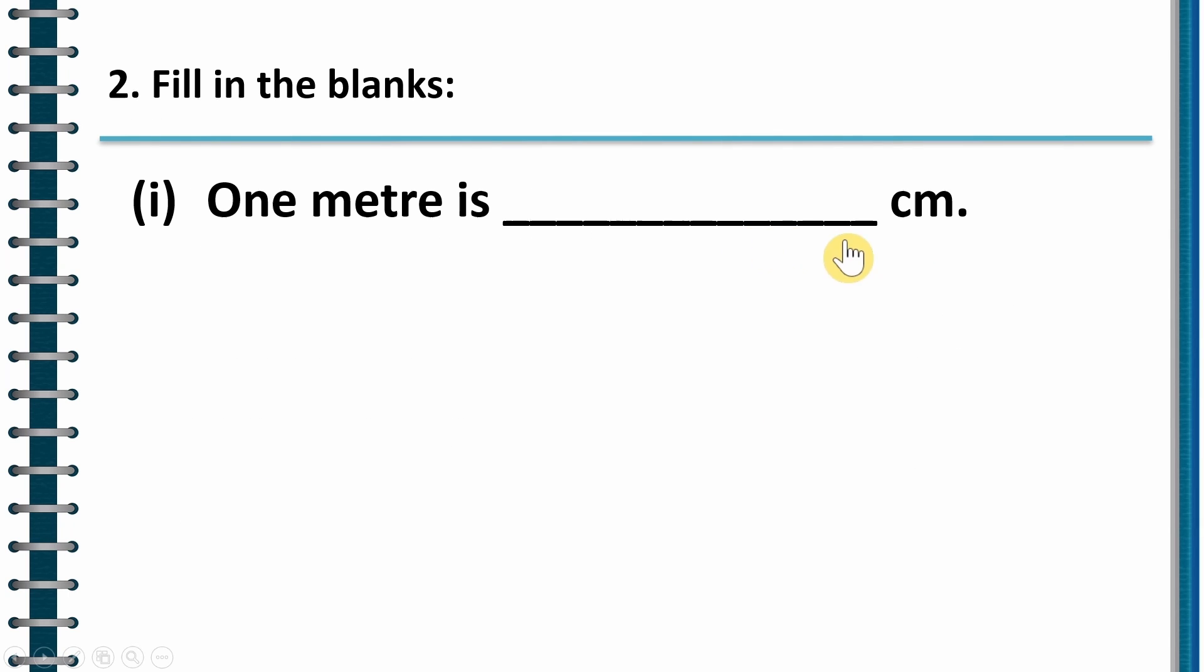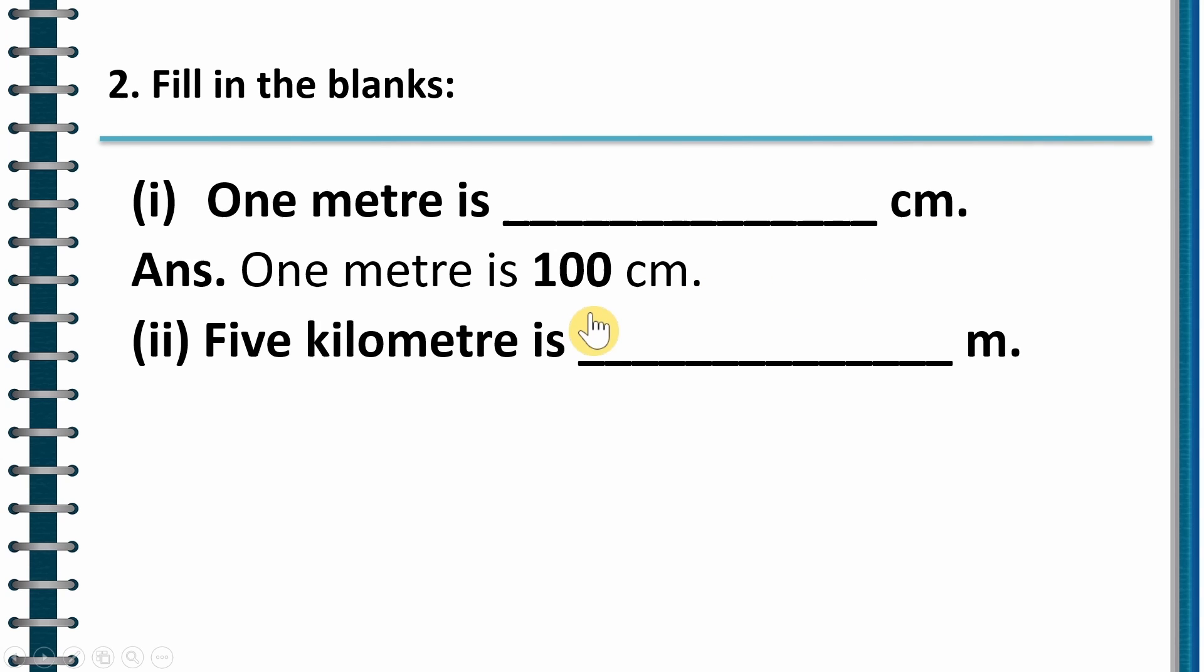Fill in the blanks. One meter is dash centimeter. What is one meter? One meter is hundred centimeter. Then five kilometer is dash meter. How do we do this? By multiplying five with thousand. So this will give me five thousand. Correct? Five thousand meter.